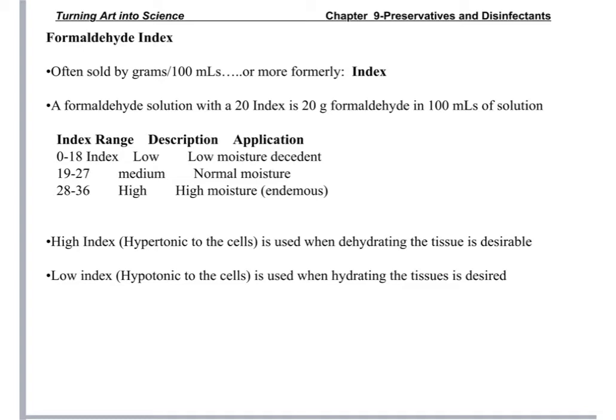The quantity of formaldehyde in a solution is given by an index number. A 20-index means 20 grams of formaldehyde per 100 mL of solution. Low index is 0 to 18 and provides low moisture for the decedent. Medium index is 19 to 27, considered normal moisture. High index is 28 to 36, associated with high moisture — so if you're using a high-index solution, you're wanting to dehydrate the tissue because there is too much fluid in the cells.